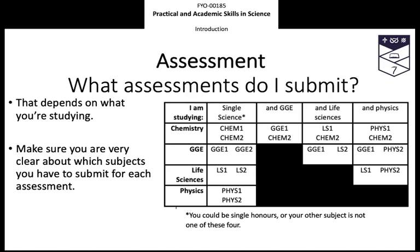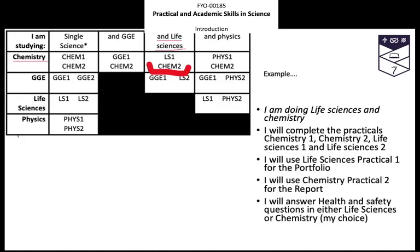How do you know which subjects to submit for? There's a handy table which is also available on the KLE, so you don't need to worry about writing this down now. But I would very seriously recommend a wall planner with all your dates and deadlines — get it on your wall so you can see the dates coming. Make a note of this information. For example, if you're studying chemistry as a single science, you submit chemistry one and chemistry two. But if you were doing chemistry and life sciences, you'd submit life sciences one for the lab diary and chemistry two for the lab report. If you're not sure about this at any point, just ask.